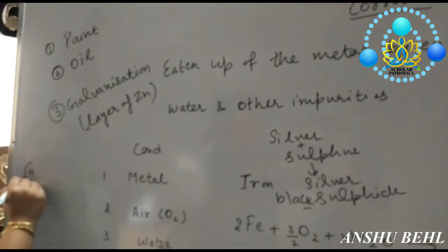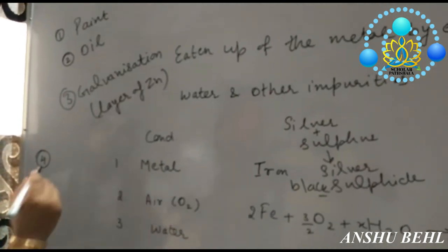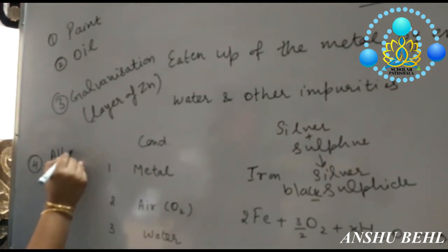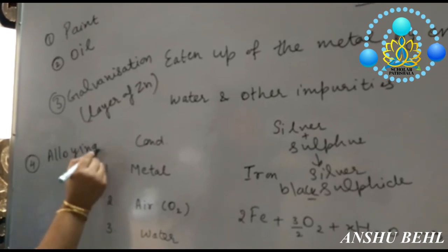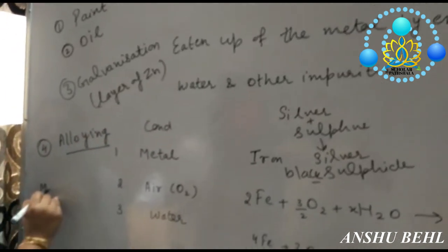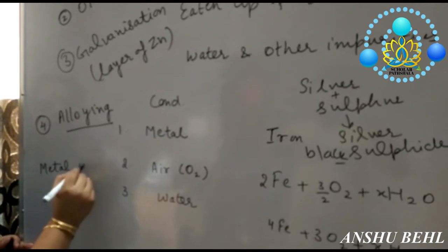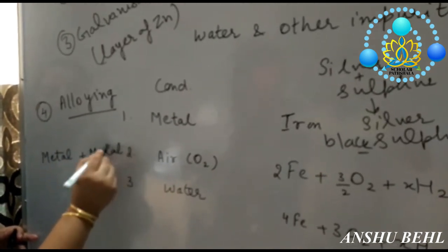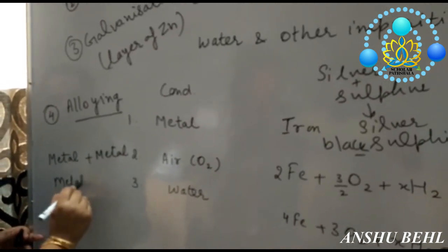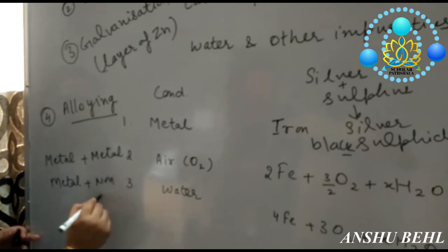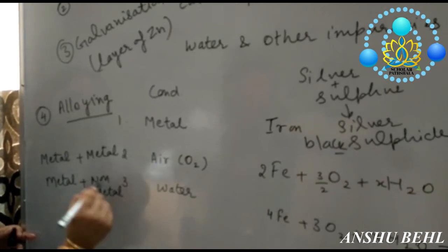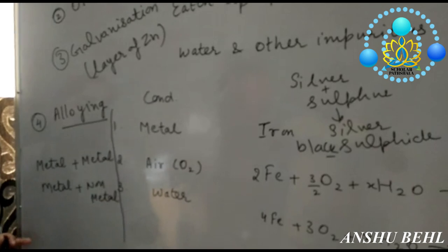Or any other method which can be used is alloying. What is alloying? Alloying means making mixture of metal with metal or metal with non-metal in such a way that its corrosion can be prevented.